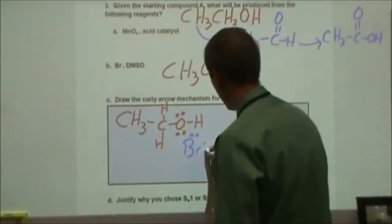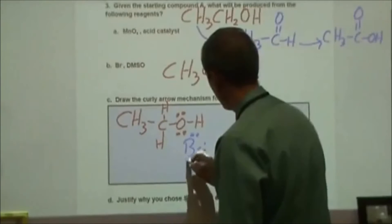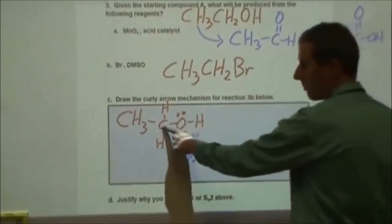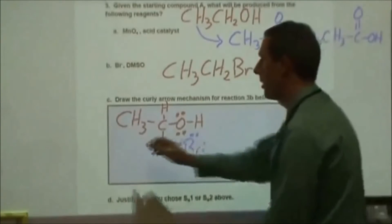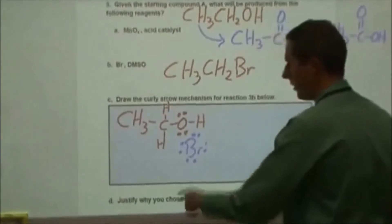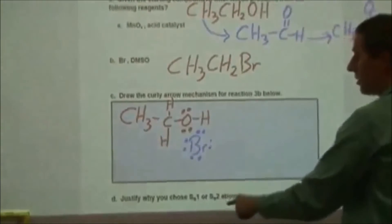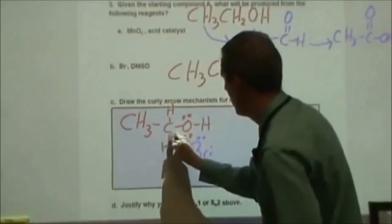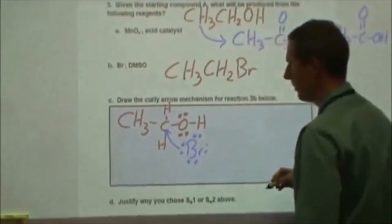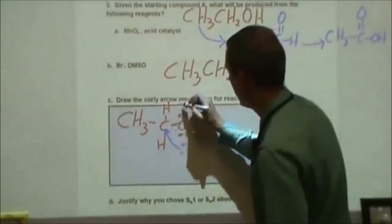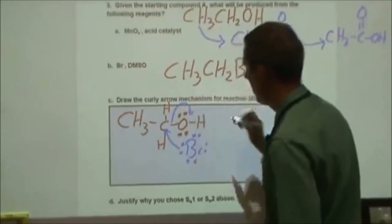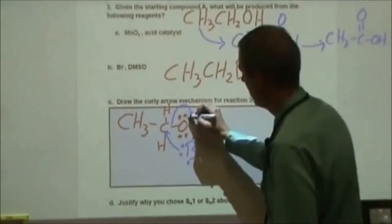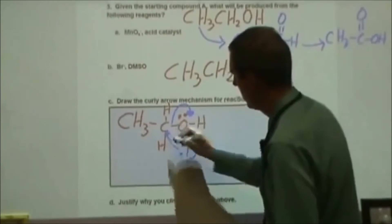The first thing we have to decide is whether this is going to be SN1 or SN2, because that determines how the mechanism goes. This carbon with the leaving group on it is primary — there's only one other carbon attached — so that's going to lead towards SN2 being the favored mechanism. In SN2, the bromide comes in and forms a bond with the carbon while the C–O bond breaks, and those electrons stay with the hydroxide as it leaves.